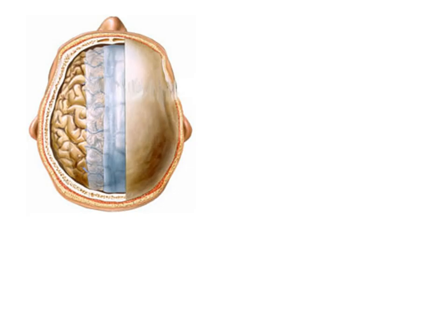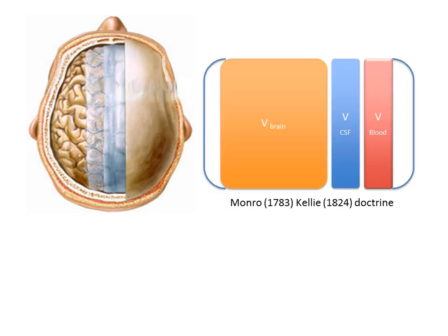If we return back to the physiology, we can easily understand why we have this problem, because we have a skull — a closed container for the brain and the dura mater — that is not accessible. We have some volume inside: physiological volumes that could change with the age of the patient, because older patients have more CSF and younger patients have lower CSF.